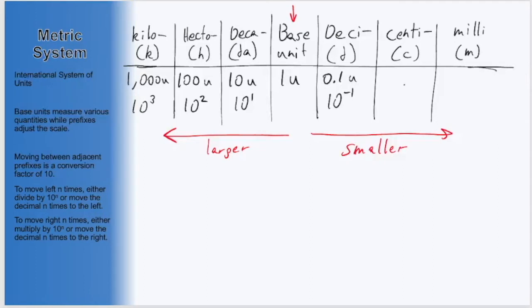Another space to the right puts us at centi, where we will have 0.01 of our base units in one centi unit, which can be written as 10 to the negative 2.